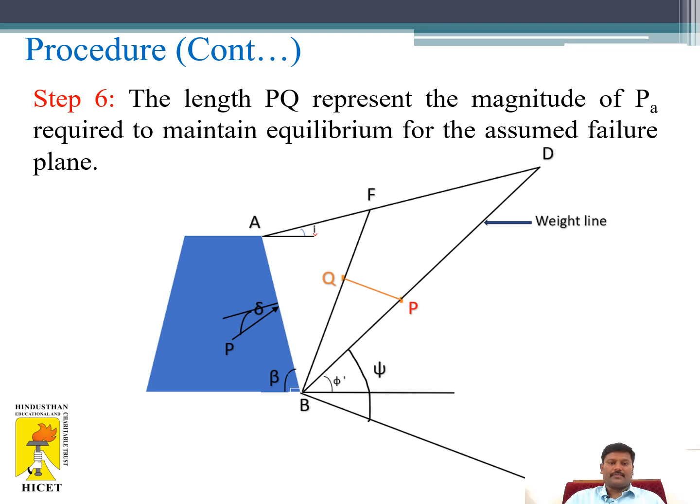Step 6: The length PQ represents the magnitude of PA required to maintain equilibrium for the assumed failure plane. PA is your active earth pressure.